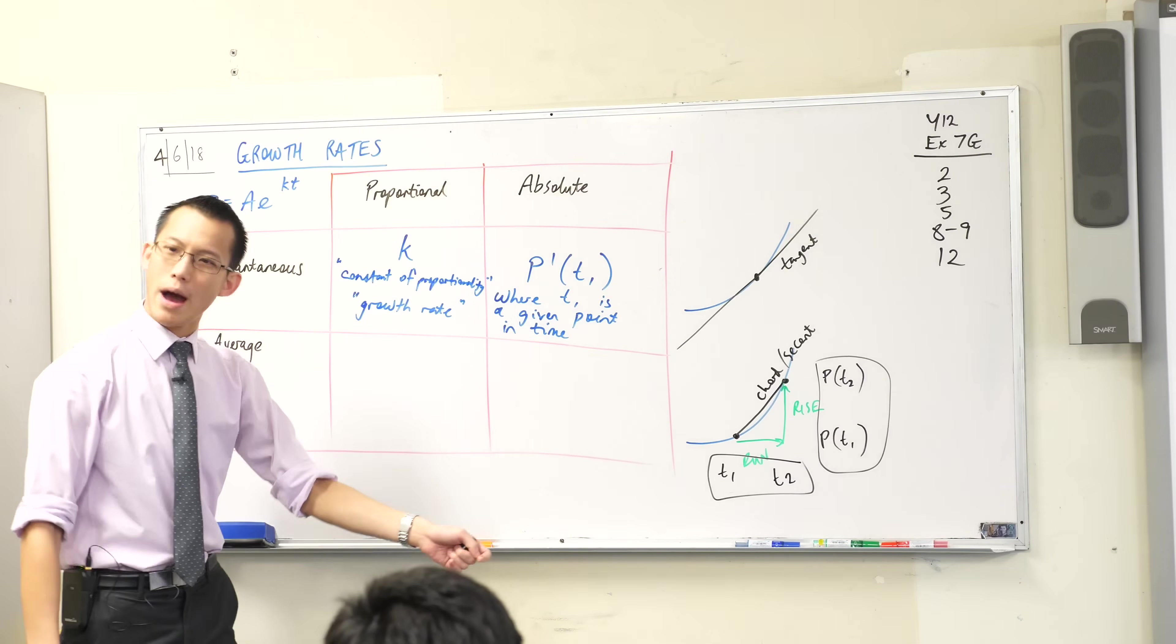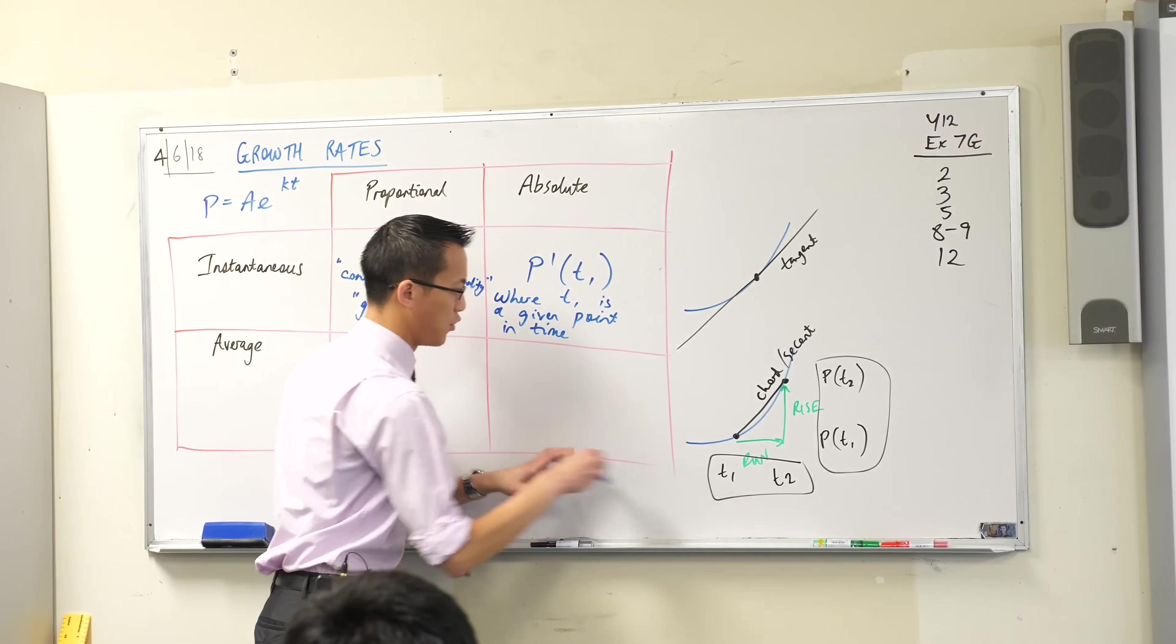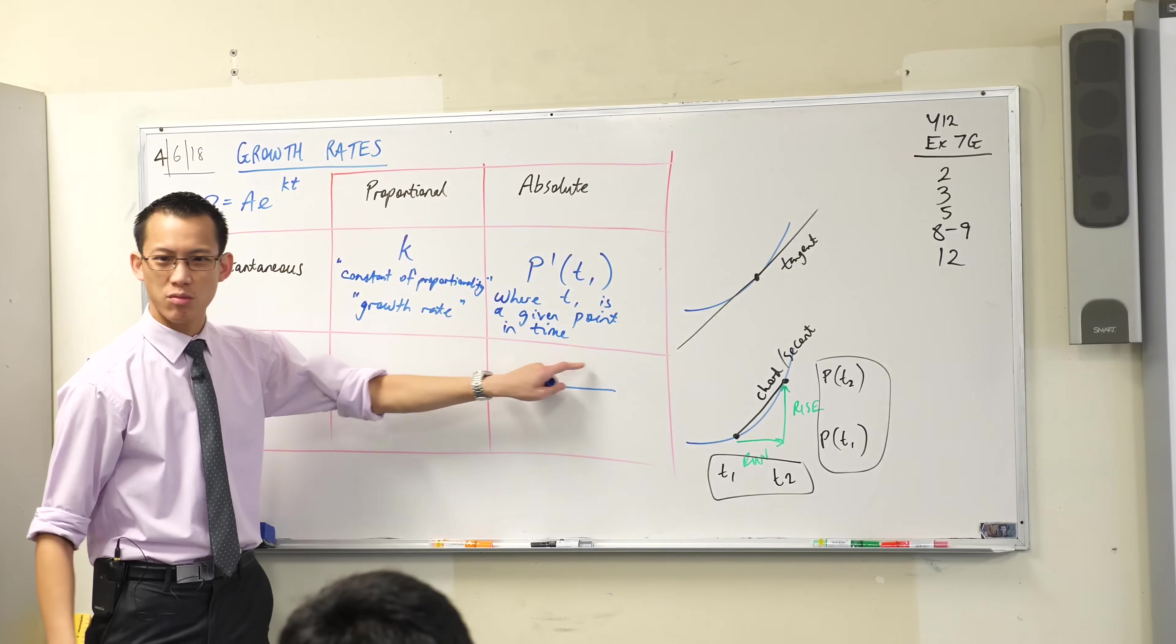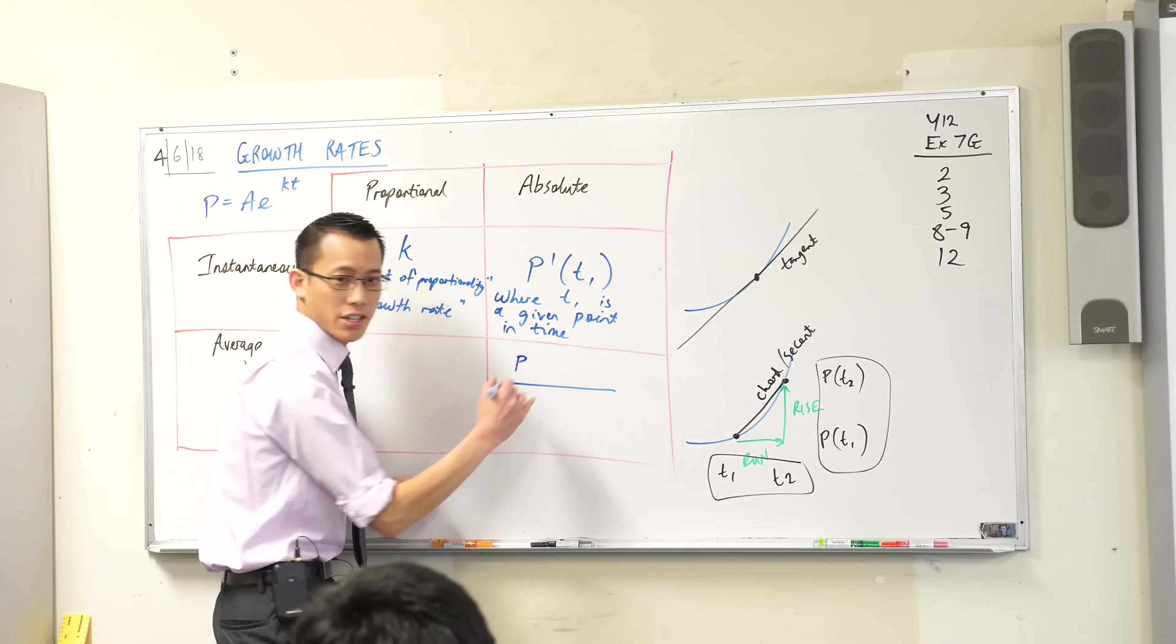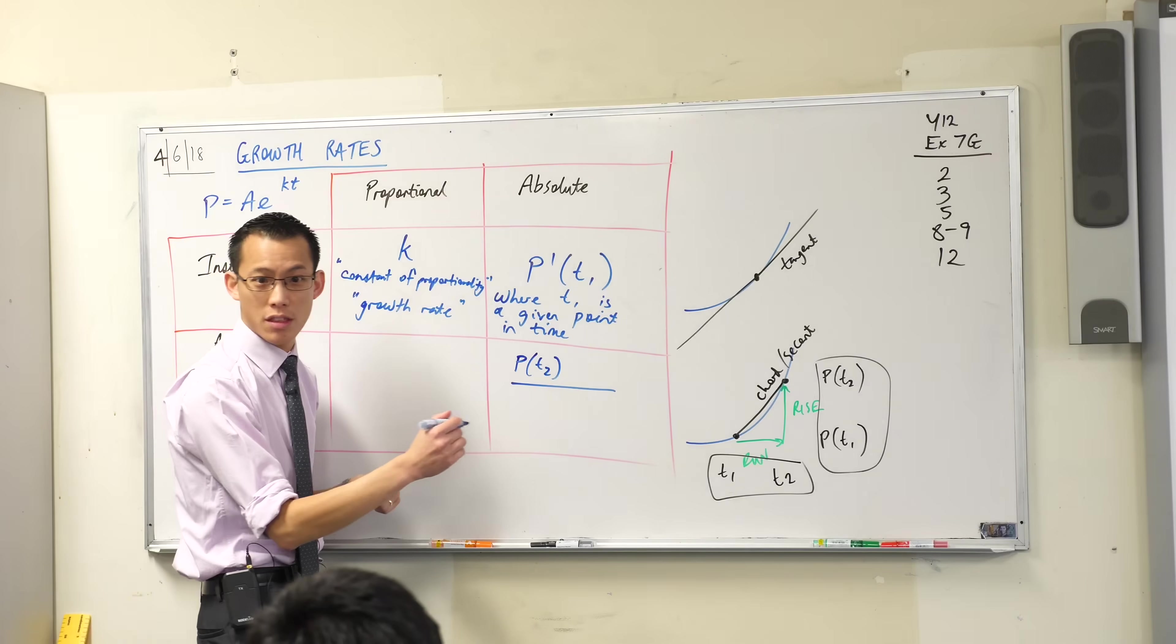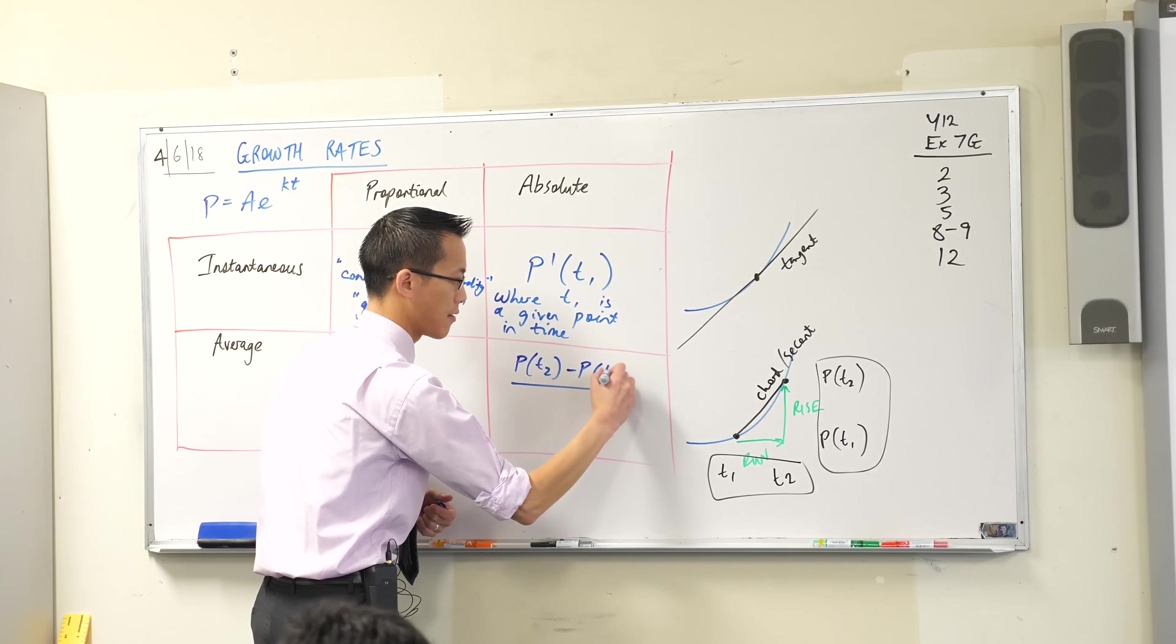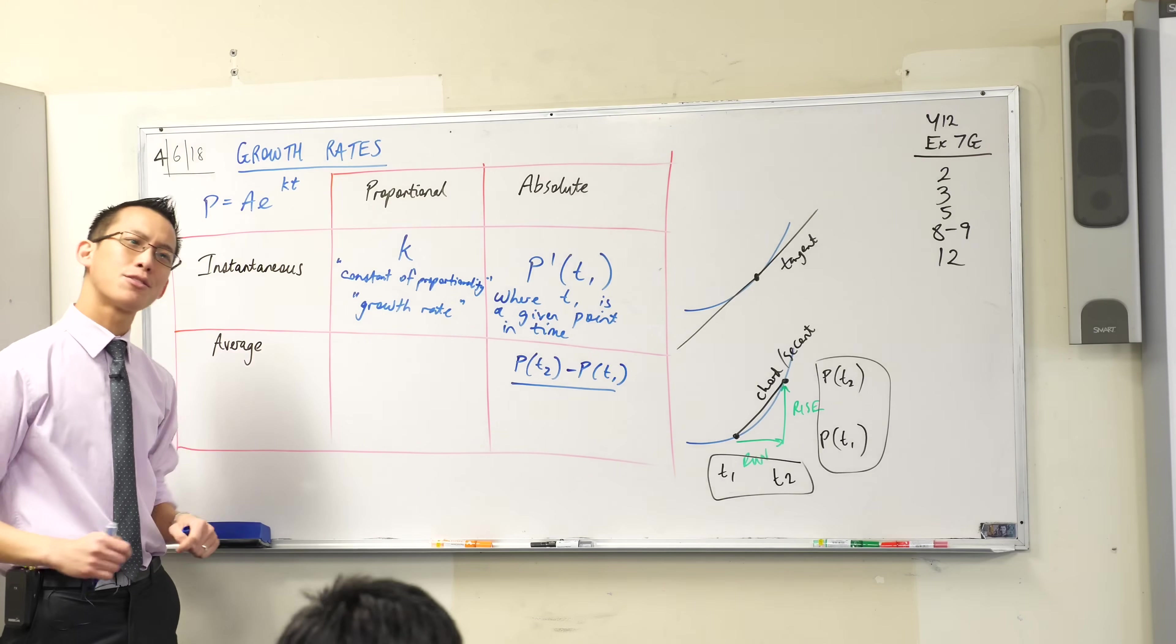So instead of writing y2 minus y1, which is what's normally on the top of my fraction here, what would be in place of y2 and y1? Have a look. Yeah, it's your population at the later time, and you're going to compare that with the population at the earlier time. There you go. So that's going to be the rise. What about the run?